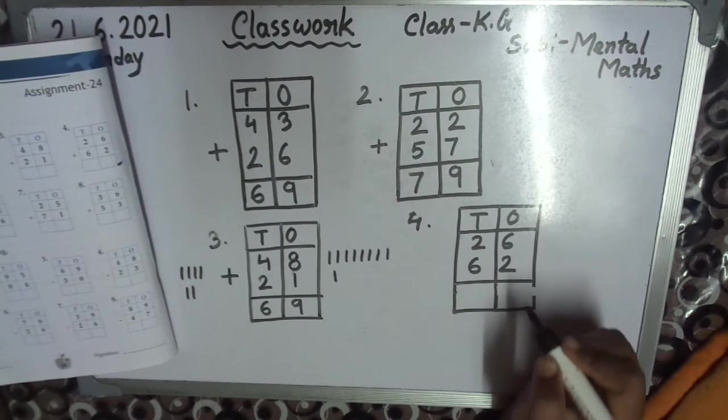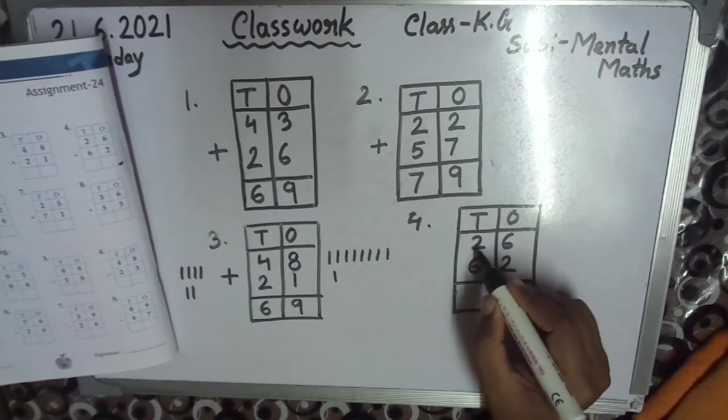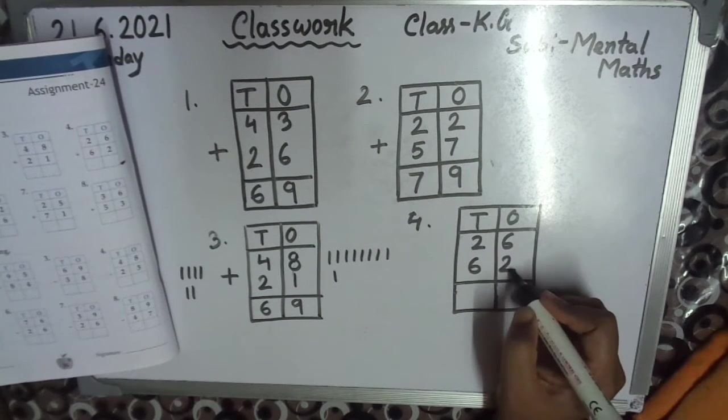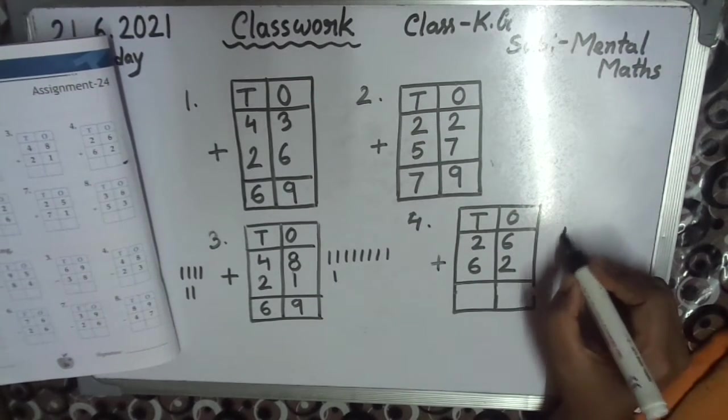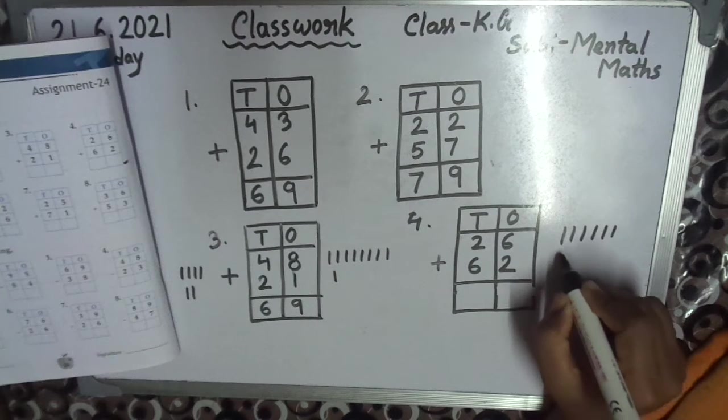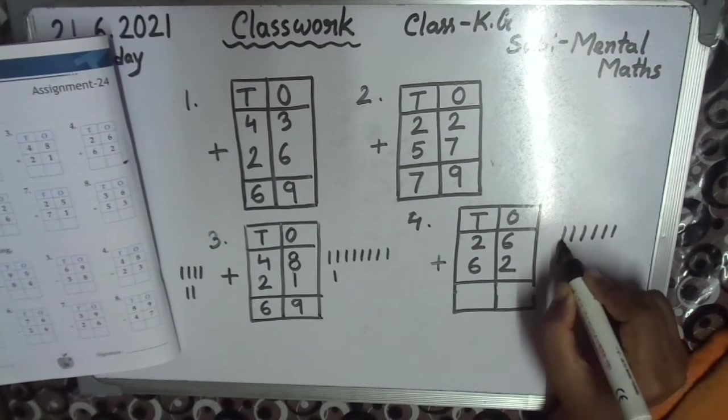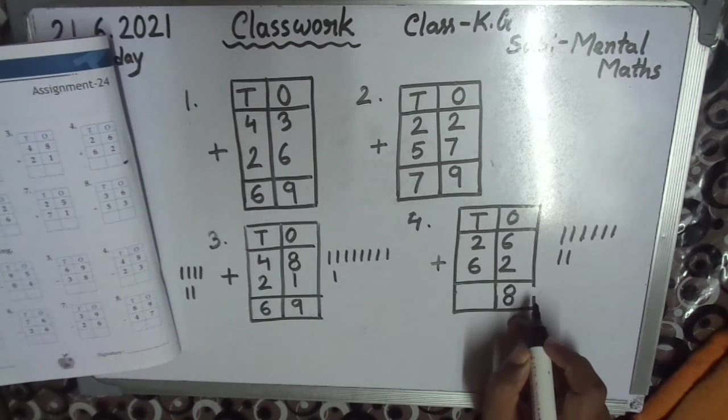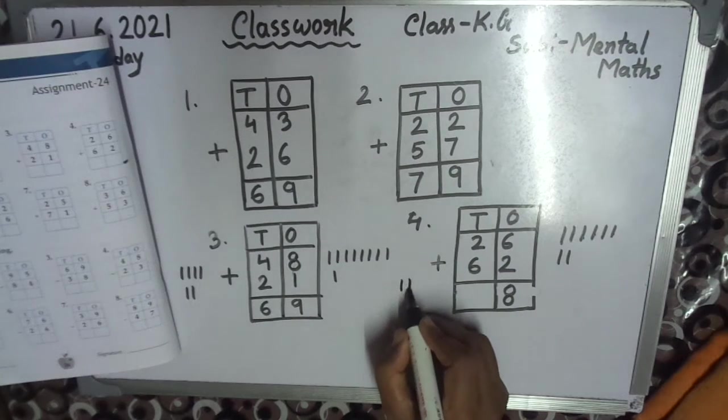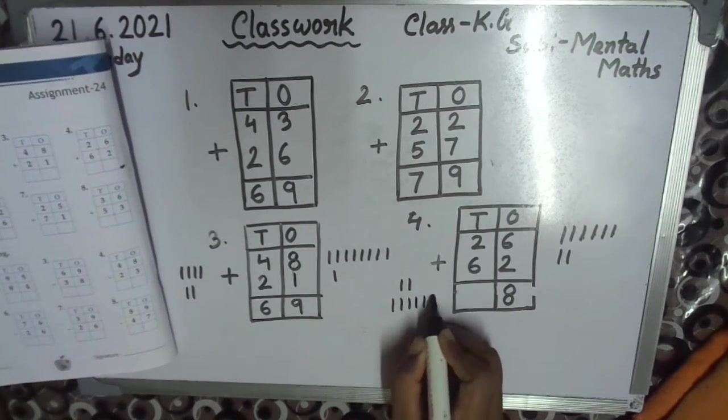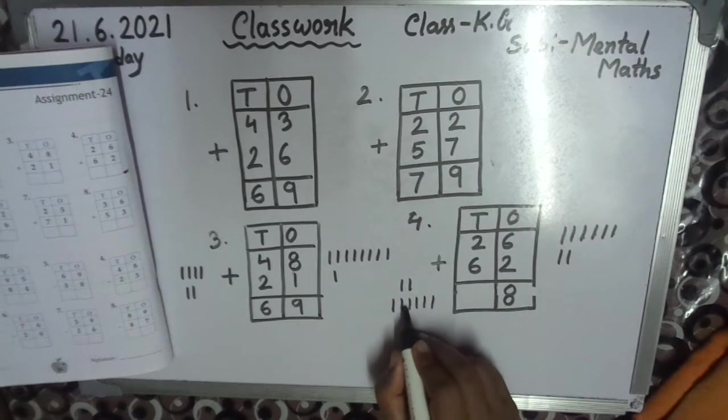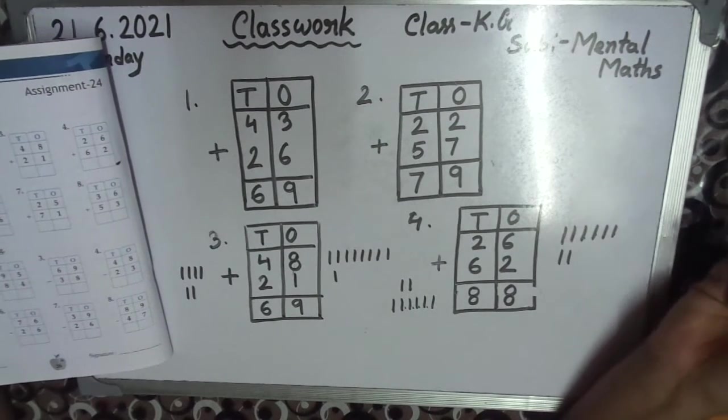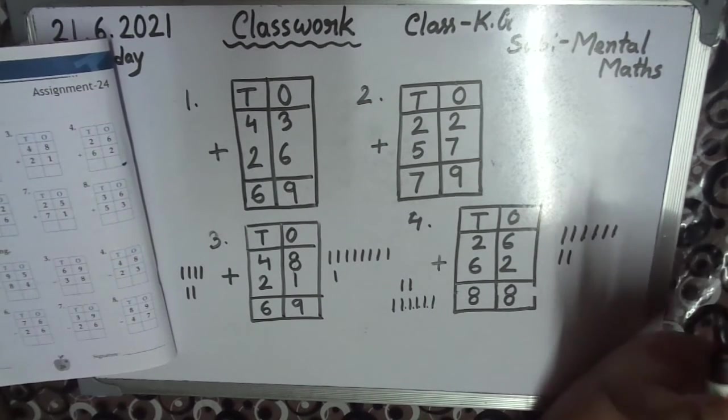See, 2 tens 6 ones, 6 tens 2 ones. So 6. And sign is plus: 1, 2, 3, 4, 5, 6, 1, 2. 1, 2, 3, 4, 5, 6, 7, 8, see. 8, answer is here in ones. So children, 2 plus 6, 6 plus 2, answer is 8.